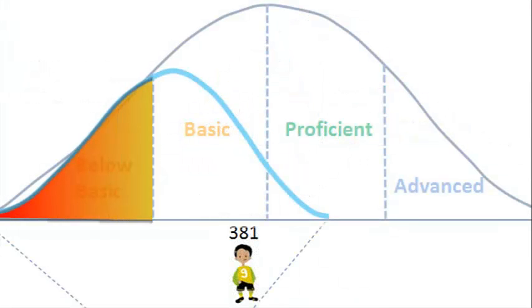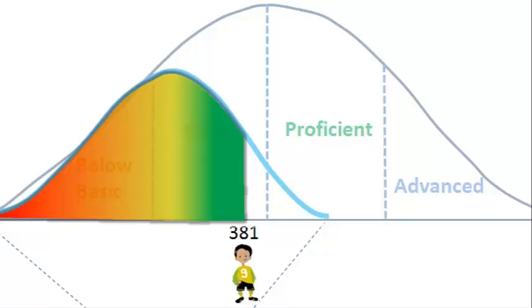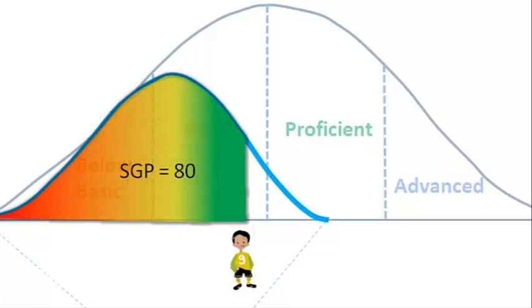Analyzing the data more closely, we can see that Anthony scored higher than 80% of the students in his comparison group. This translates to a student growth percentile of 80.